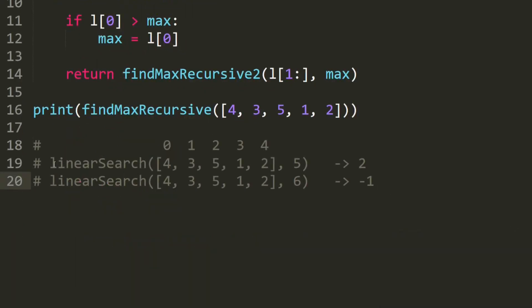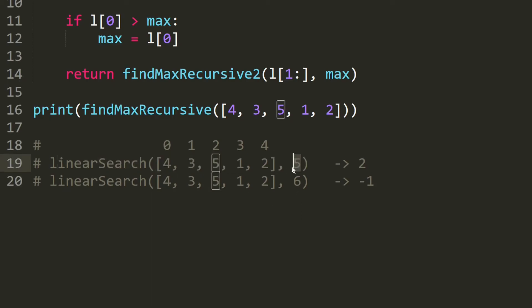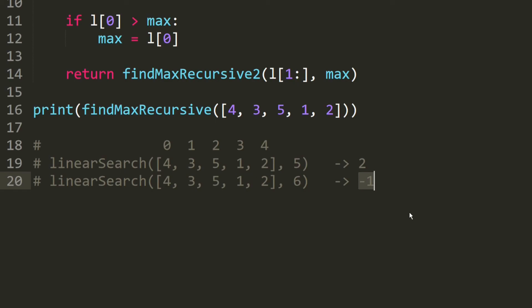In the next video, I will explain linear search using a for loop and then using recursion. Basically, if you have an array and you want to find the number five in it, you know that five is at index two, so the result will be index two. If you search for something that doesn't exist — like number six — the program will return negative one, which means it doesn't exist in this array. And that is basically it for today. I hope you guys enjoyed this video. If you did, don't forget to hit like, and if you haven't subscribed, go ahead and click that subscribe button. I'll see you in the next video.